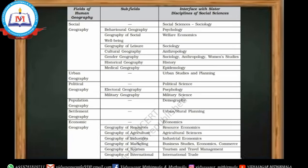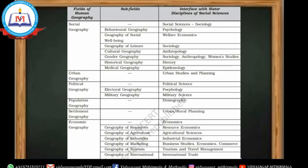The sister discipline of economic geography is industrial economics. Sub-fields include geography of marketing, business studies, economics and commerce, geography of tourism, geography of international trade, geography of resources, geography of agriculture, and geography of industries.